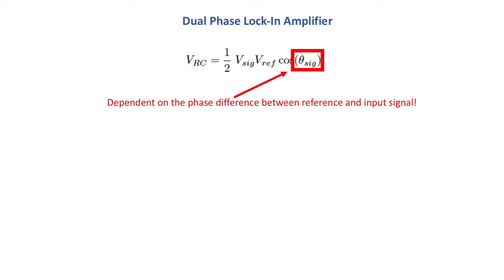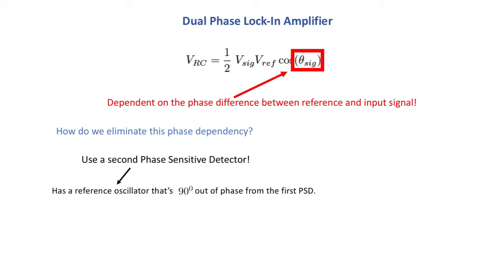So what that means is that we have two phase sensitive detectors in there. The first one is the one that I just showed you and the second one has a reference oscillator that's 90 degrees out of phase from the first phase sensitive detector.